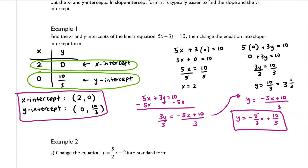As a knowledge check, ask yourself: what is the slope of this equation? Pause the video and think about it. If you said the slope was negative 5 over 3, you would be correct.